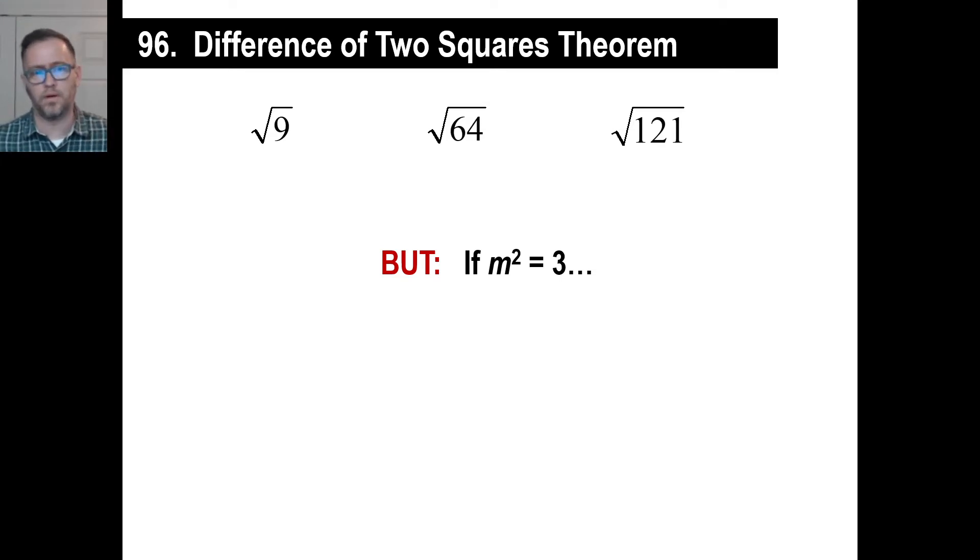We've dealt with the difference of two squares before, and we're going to look at the answers of those top three. We have the square root of nine. We know the answer to that, right? It's three. The square root of 64 is eight. The square root of 121 is 11.